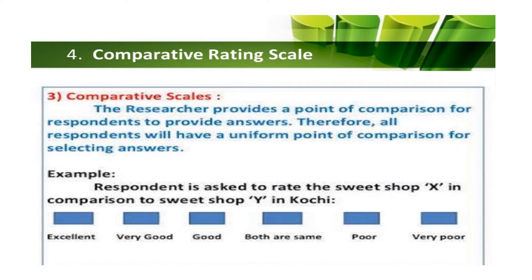The fourth type is the comparative rating scale, where the researcher provides a point of comparison so all respondents have a uniform basis for answering. For example, the respondent is asked to rate sweet shop X in comparison to sweet shop Y in Kochi, using traits like excellent, very good, good, both are same, poor, or very poor.